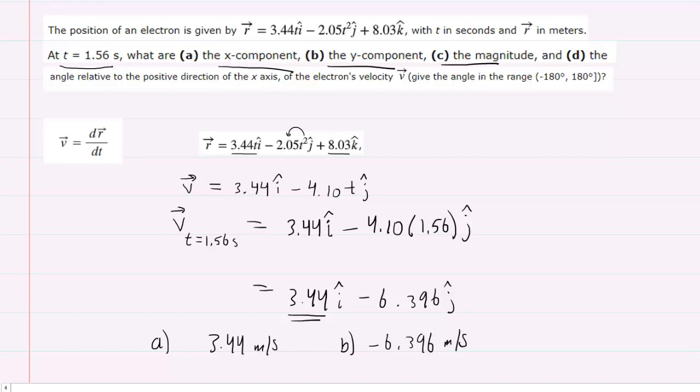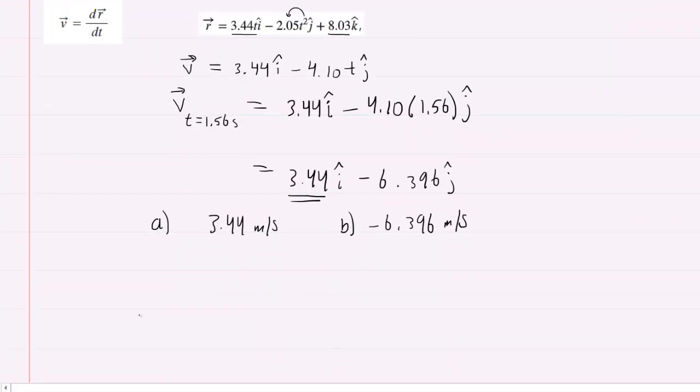Now on to part c, we need the magnitude of the electron's velocity. And to obtain the magnitude of the electron's velocity, we're going to make a little bit of a sketch here.